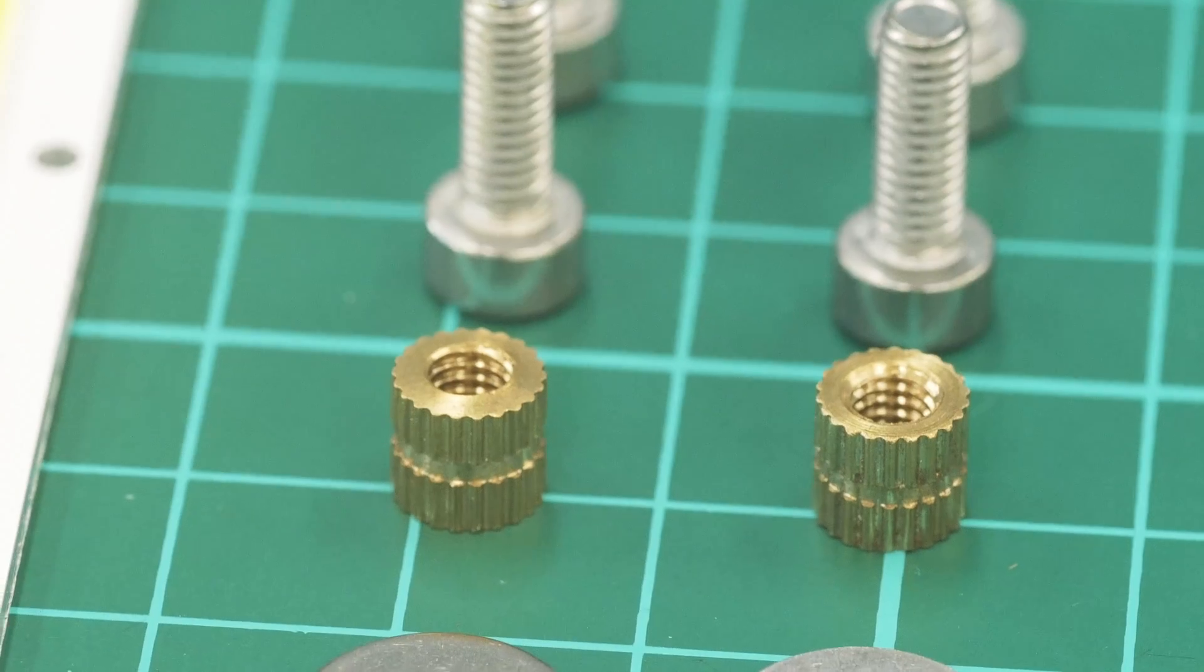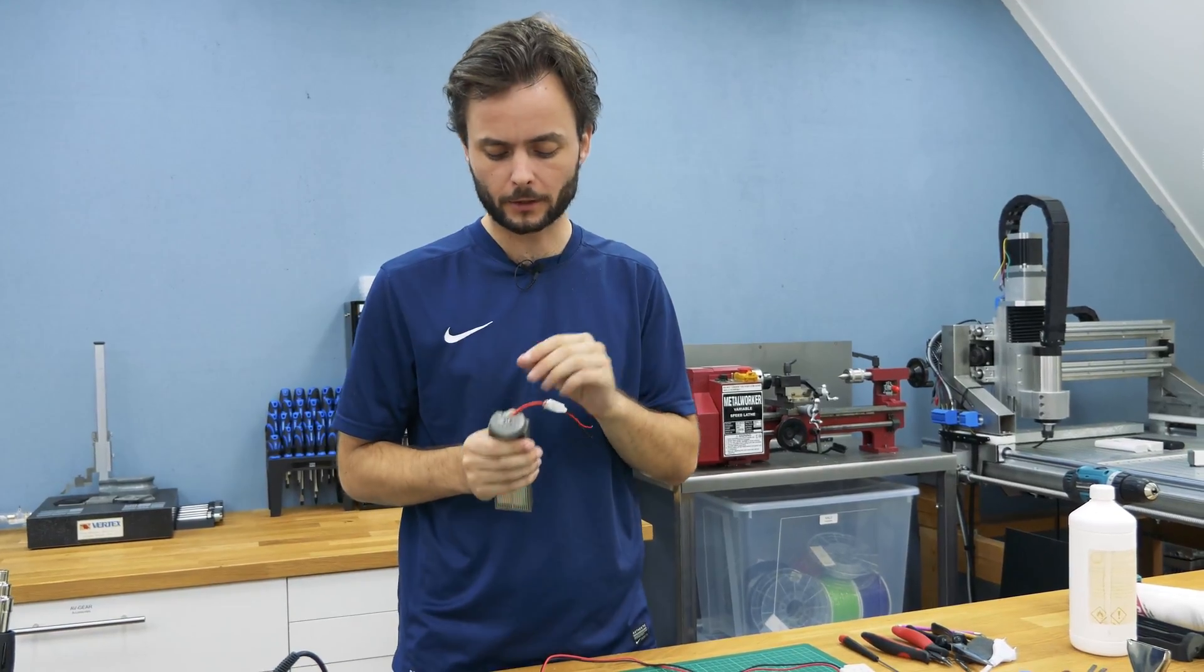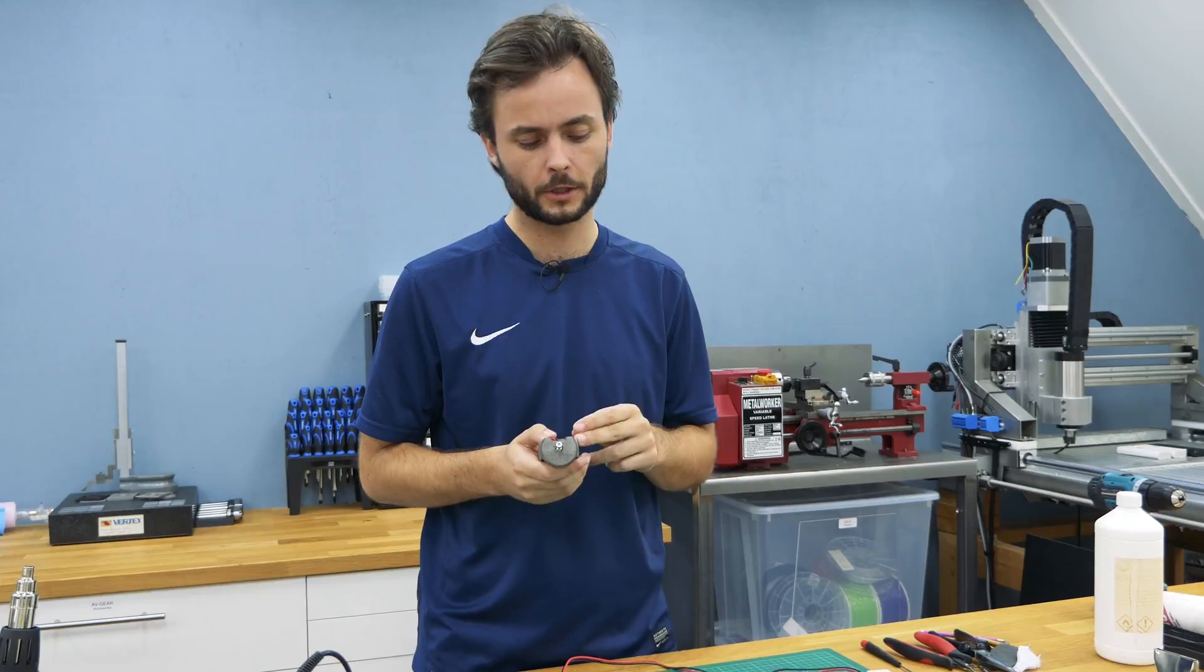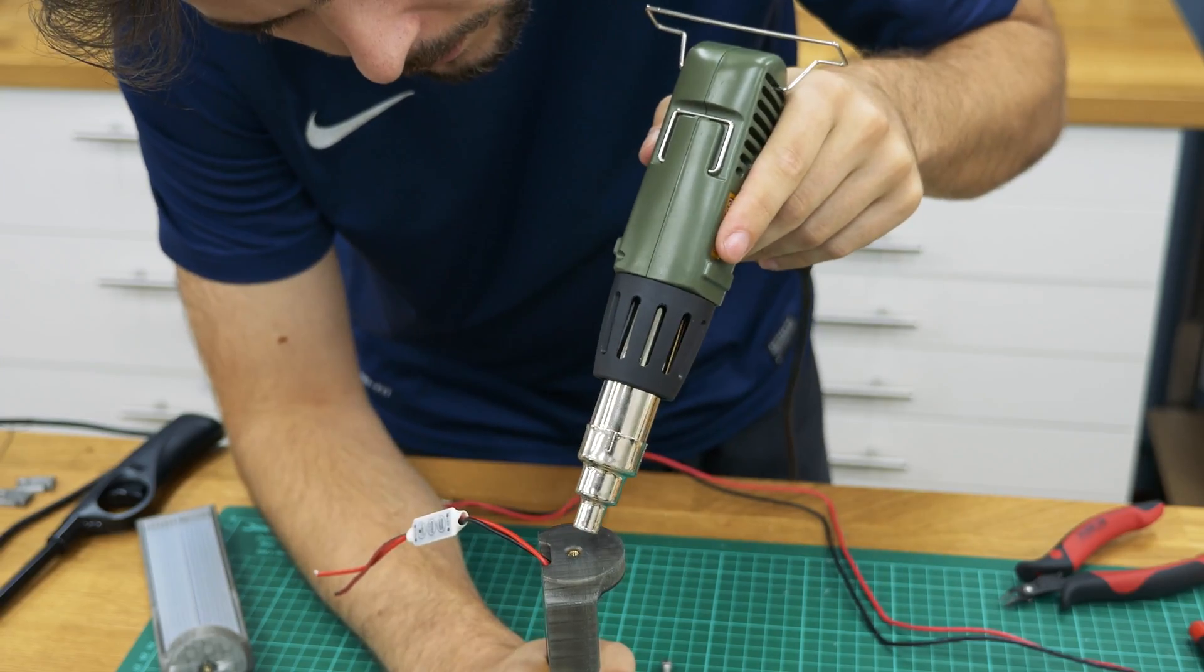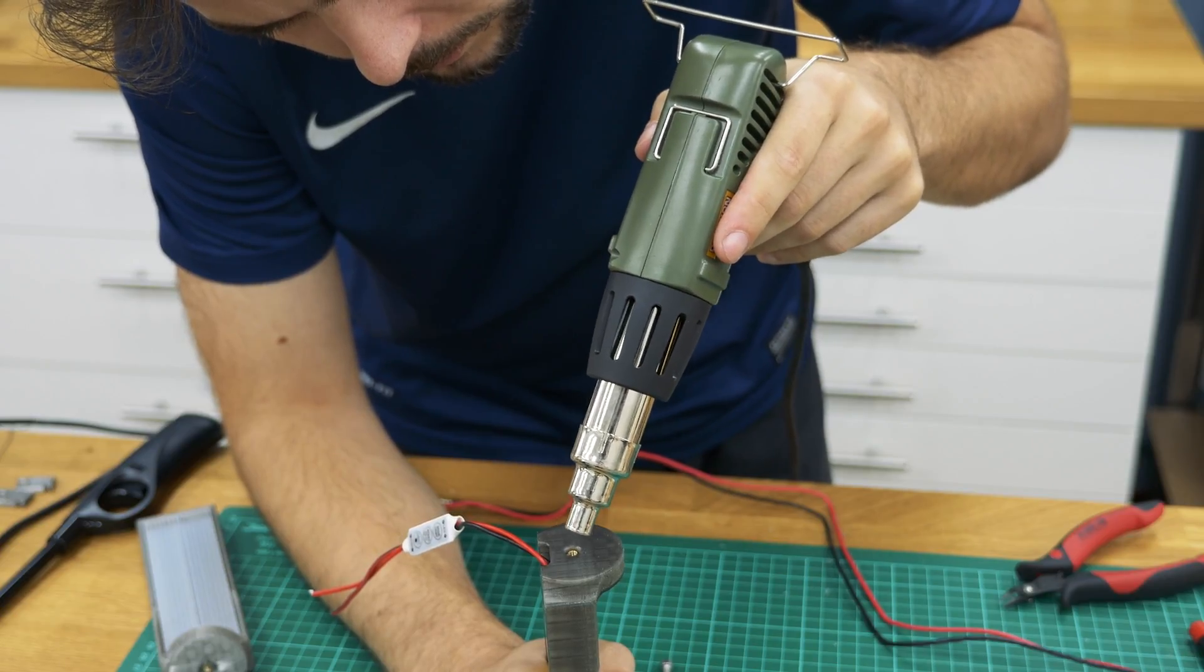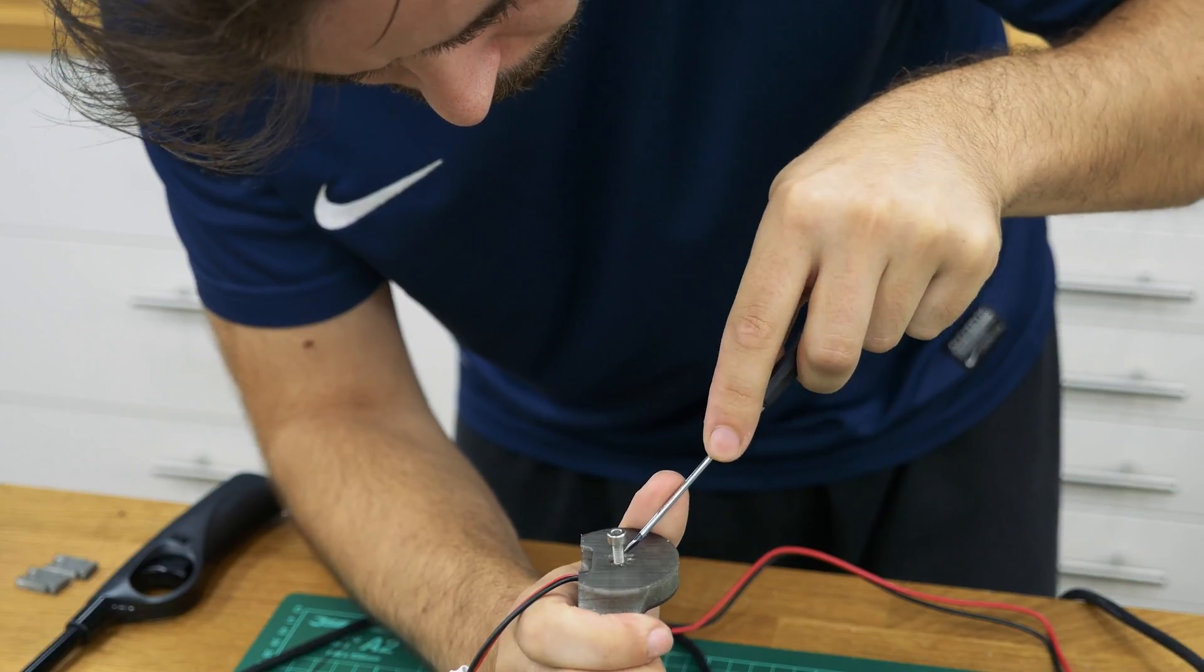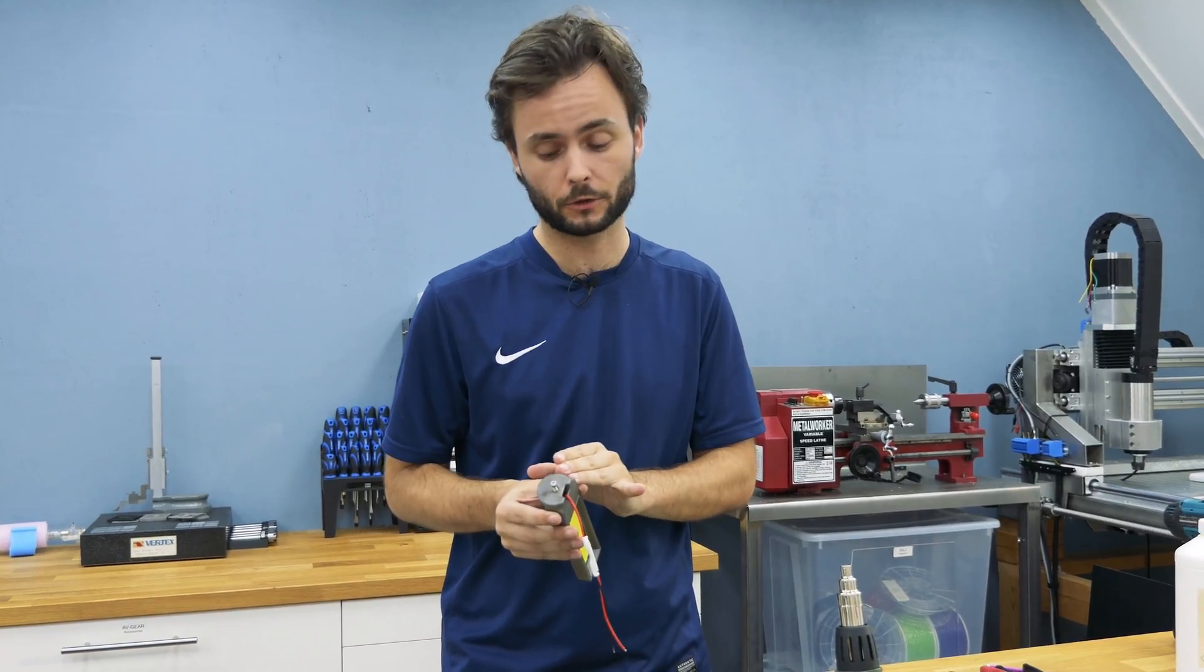So I was inserting these brass threaded bushings and I noticed that there were a little bit too loose in the holes. Instead, I used my heat gun to heat it up locally around the bushing, specifically the plastic, and then I deformed it with a screwdriver just to pinch the plastic around the bushing. So now it's fixed in place correctly.